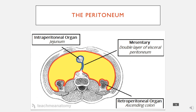This is another view of the peritoneum — just a transverse section. It shows a mesentery here, and it shows how you have viscera within the visceral peritoneum.